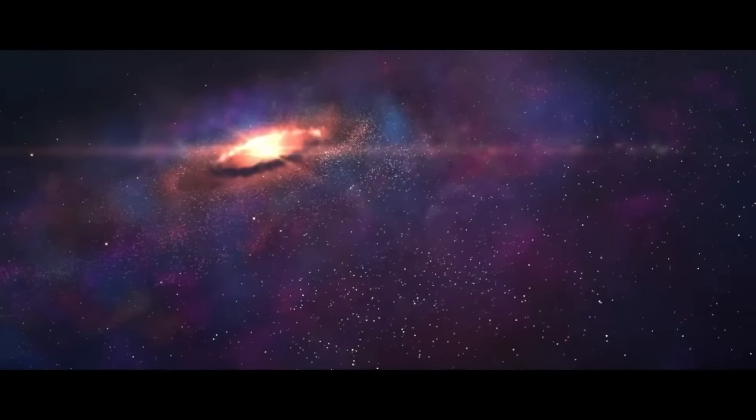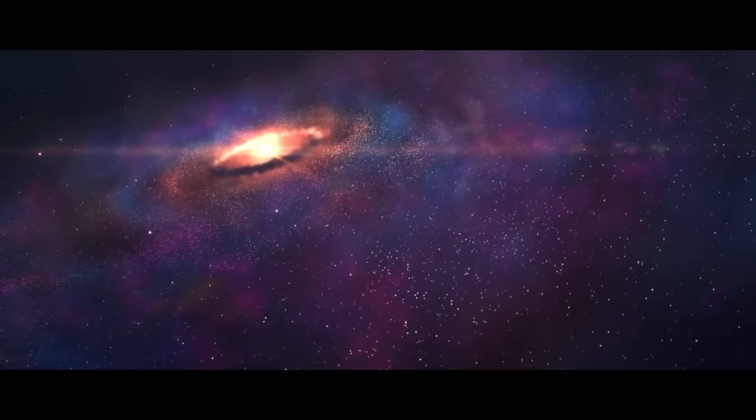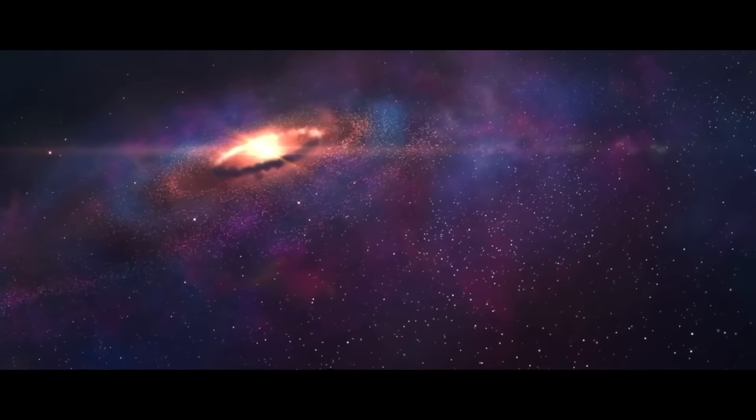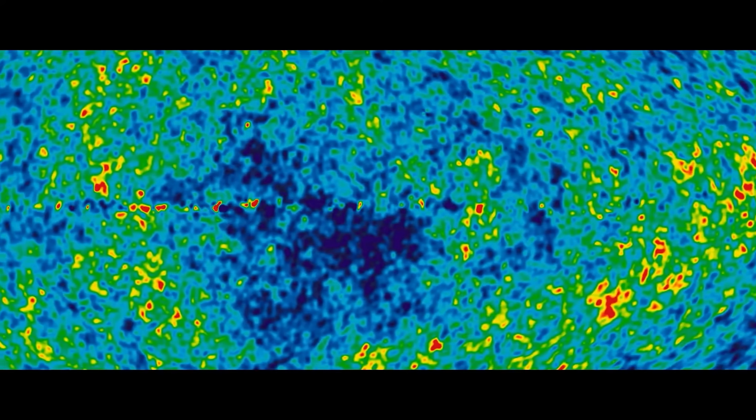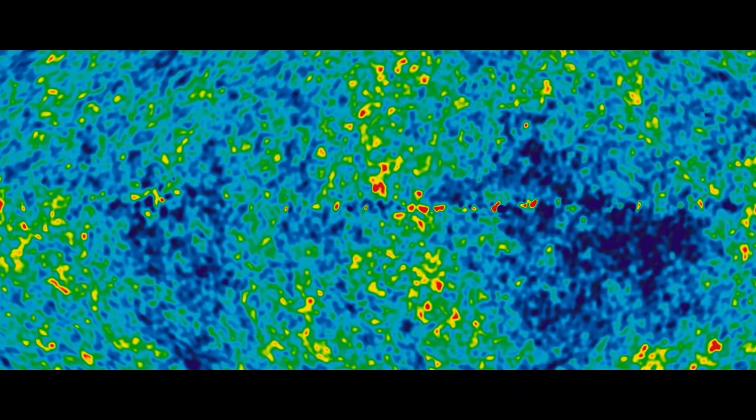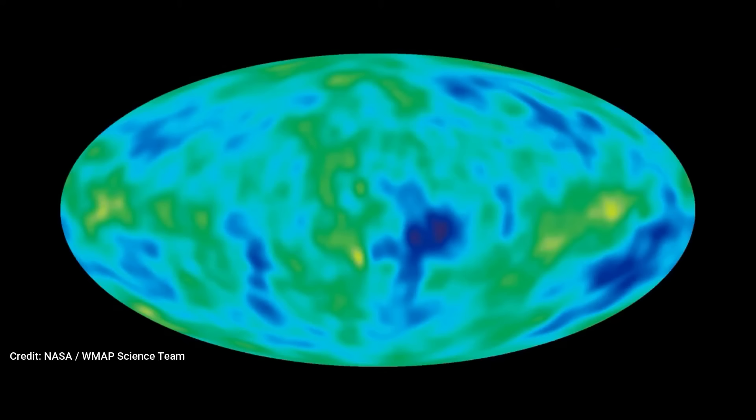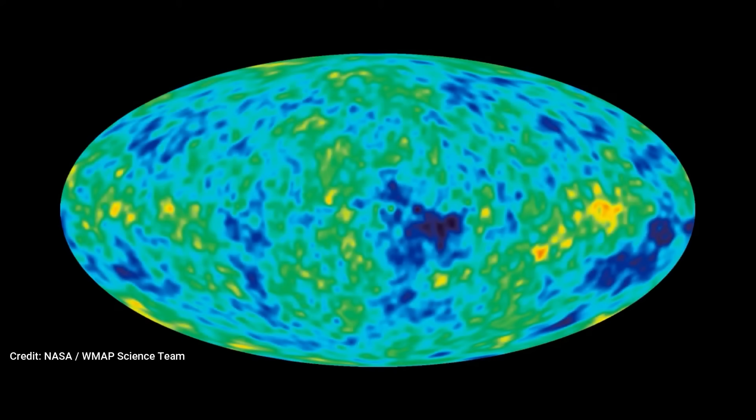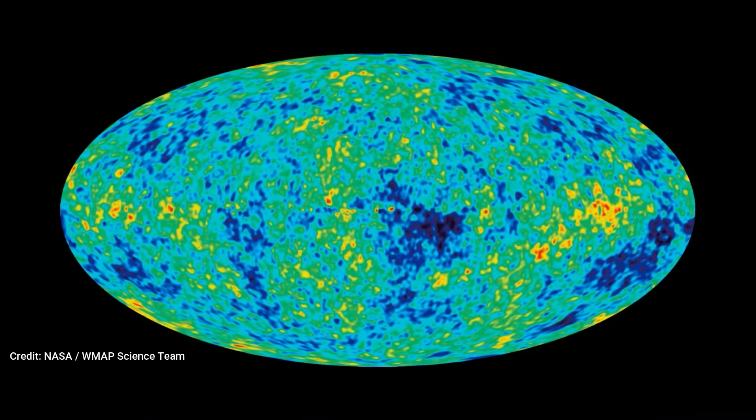The observed motion of galaxy clusters challenged existing theories about the distribution of mass and gravitational influence in the universe post-Big Bang. Traditional models had predicted a more uniform distribution of cosmic structures on large scales, yet dark flow suggested a coherent and direct movement of clusters towards a common point beyond our observable universe.